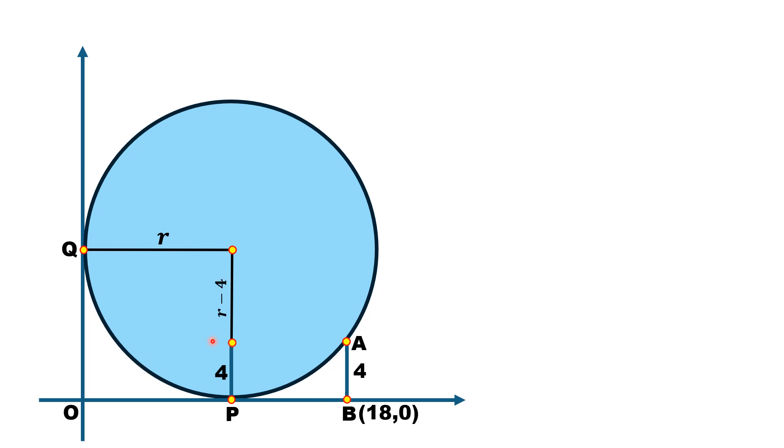Now this length is r, and the whole length is 18, therefore the length PB is 18 minus r. Since PB is 18 minus r, this length must also be 18 minus r.